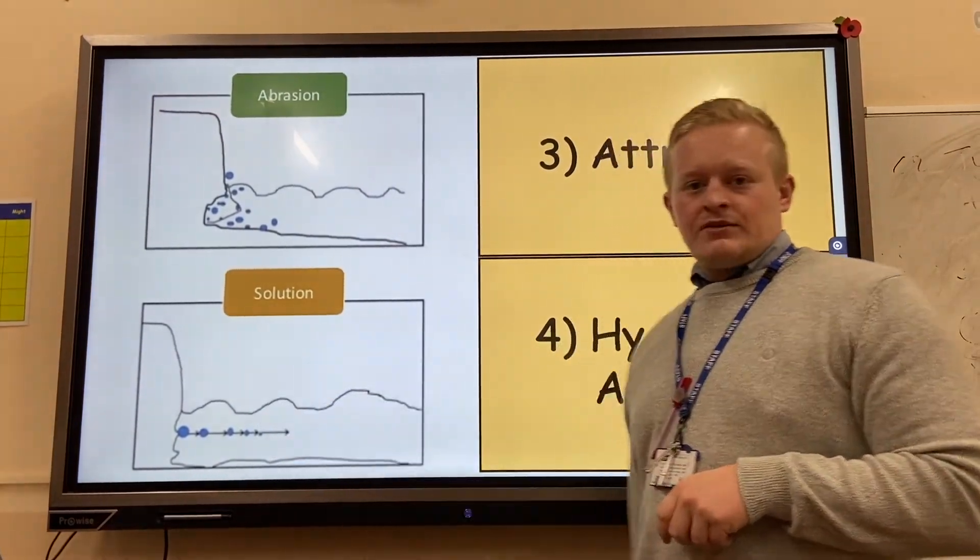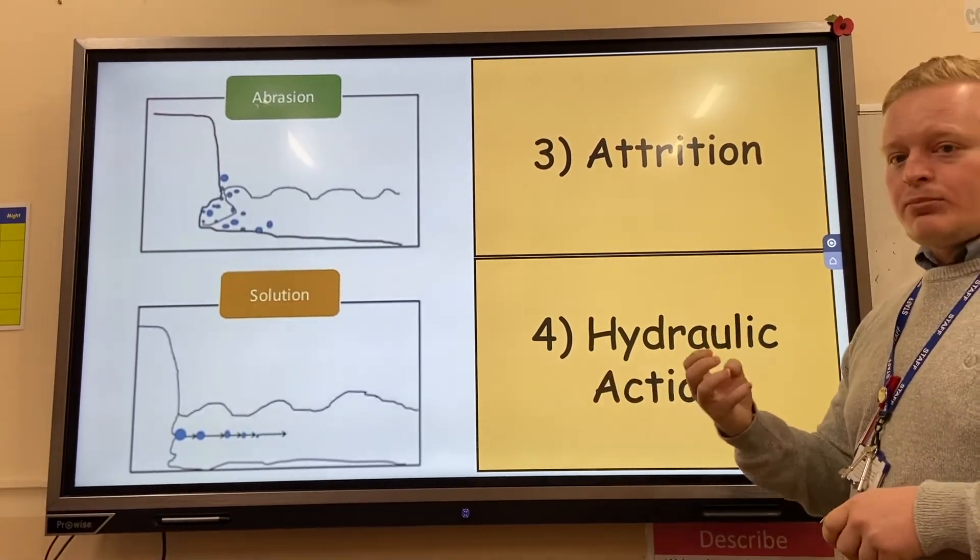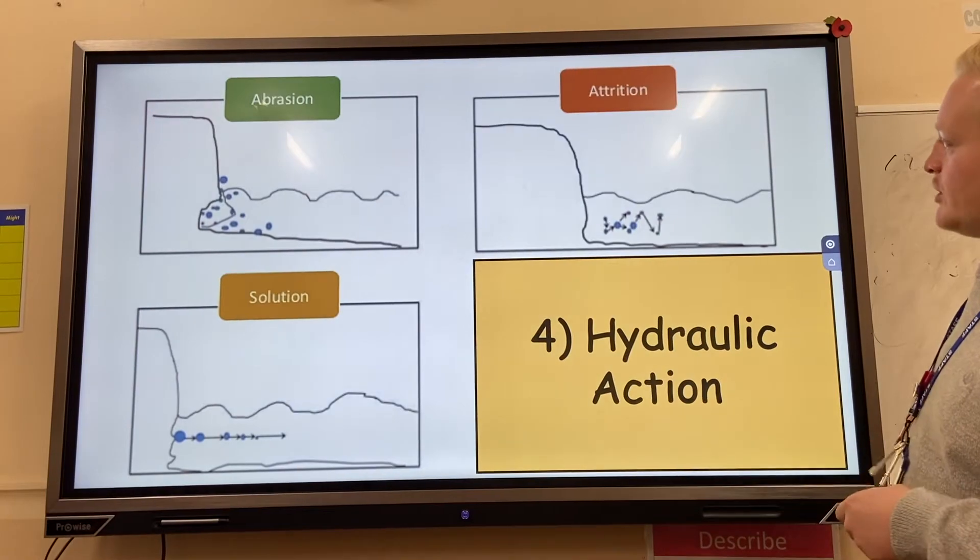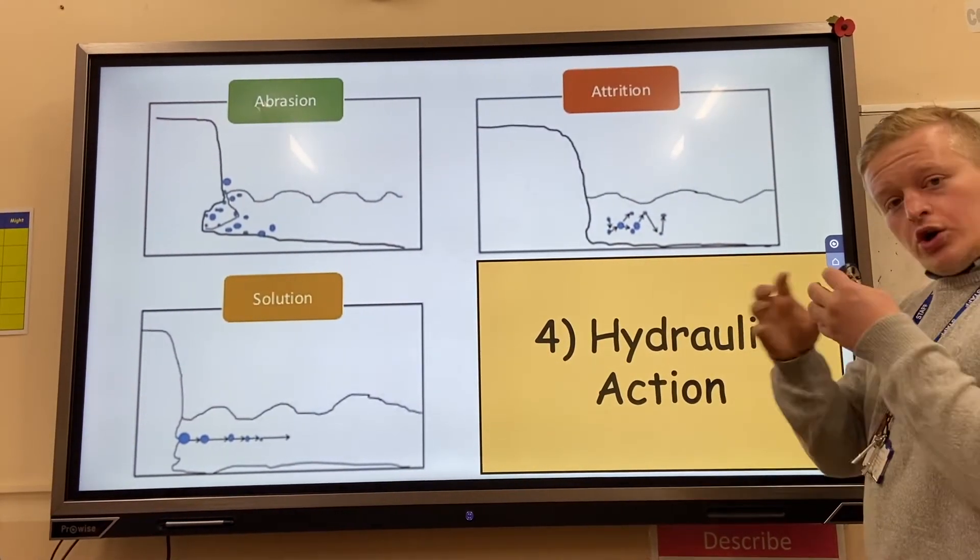dissolves the base of the cliff. We have something called calcium carbonate that gets eroded, gets worn, gets broken down. Our third one, attrition: the rocks, the pieces of sediment in the sea themselves get hurled against each other.